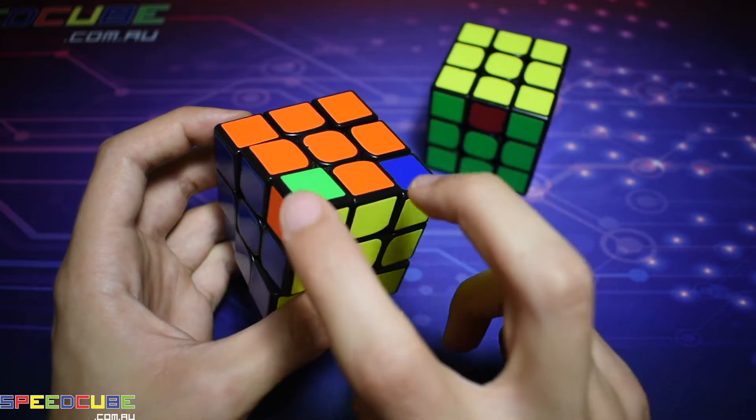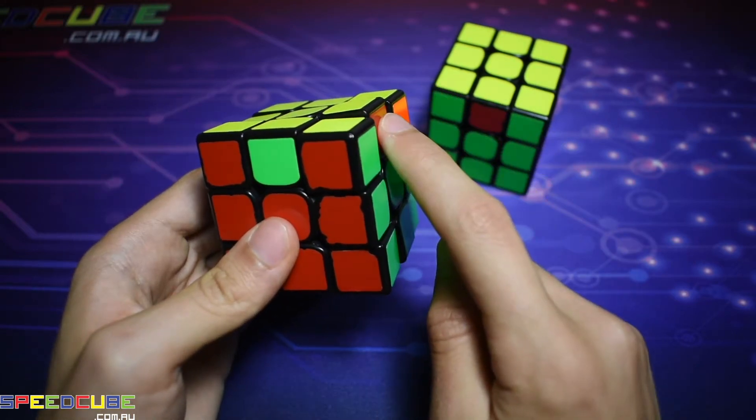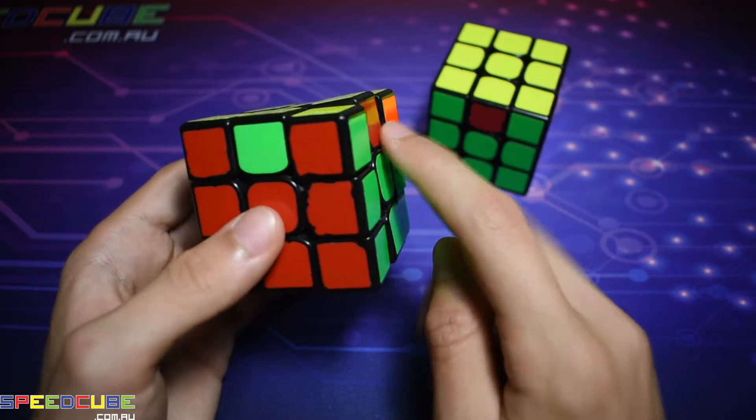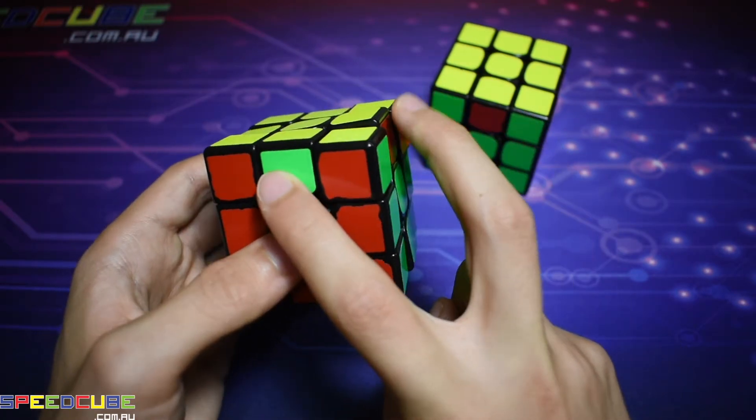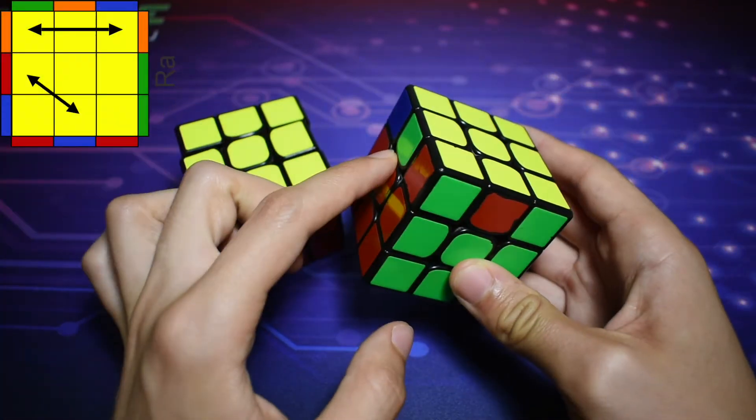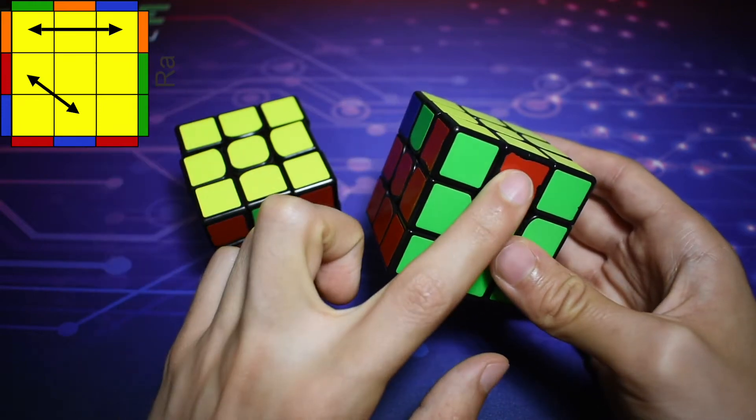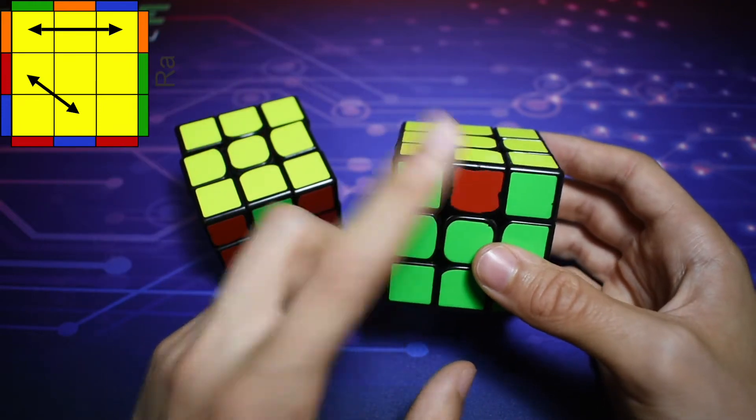So holding the two corners that need to switch at the back, the edge that this edge needs to switch with will be on the right for one of them, and for the other case, the edge that this front one needs to switch with will be on the left, as you can see, because red needs to go over here and green needs to come over here.